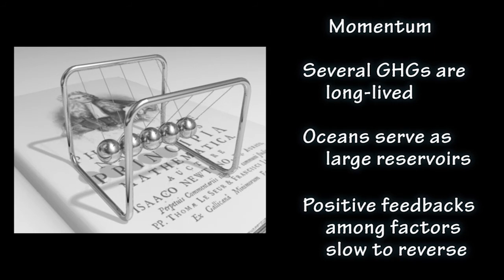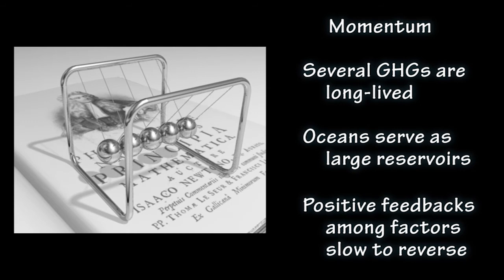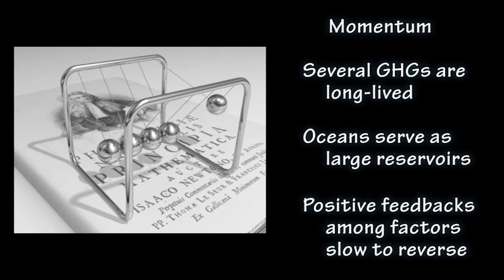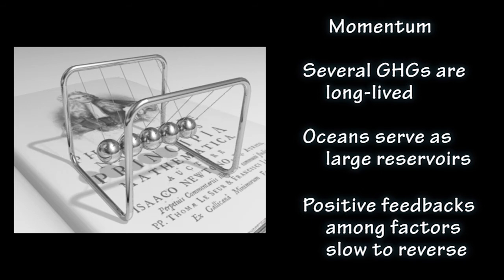Second, oceans serve as large reservoirs of carbon dioxide that only slowly exchange gas with the atmosphere — less than 0.3% per year. This means that carbon dioxide released from human activities accumulates gradually over time in the oceans and will dissipate only slowly once human emissions abate.